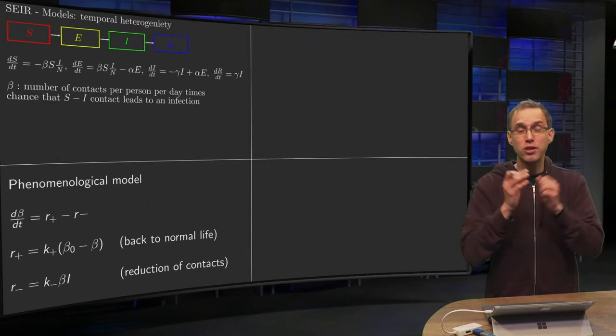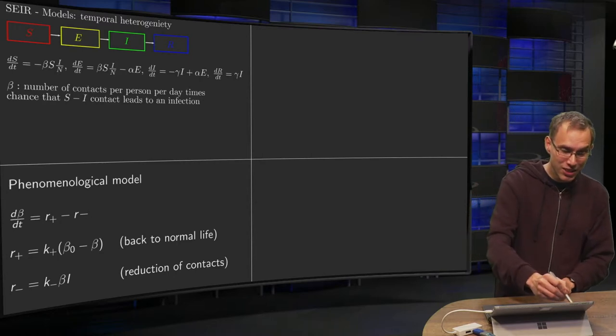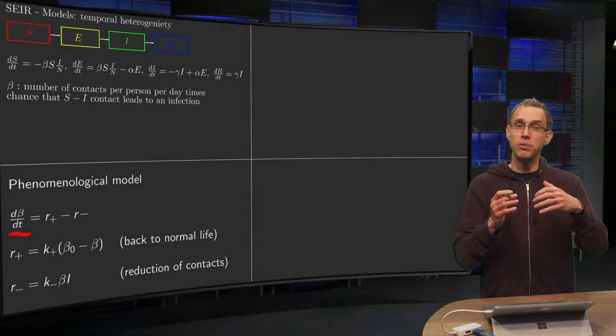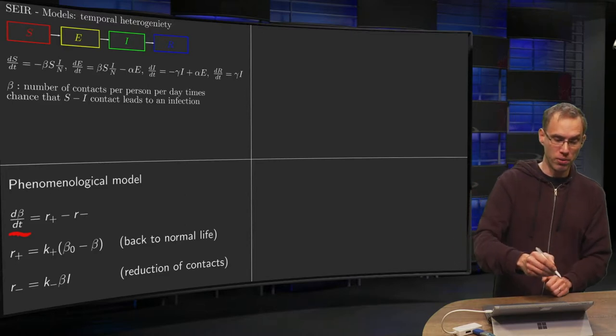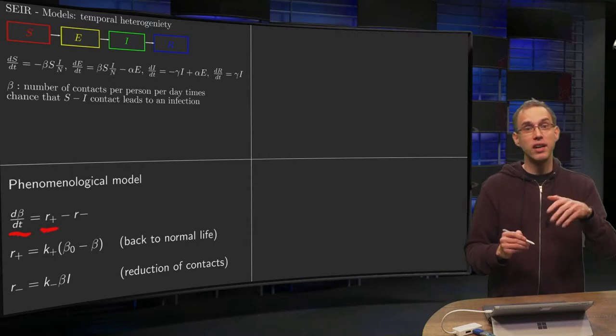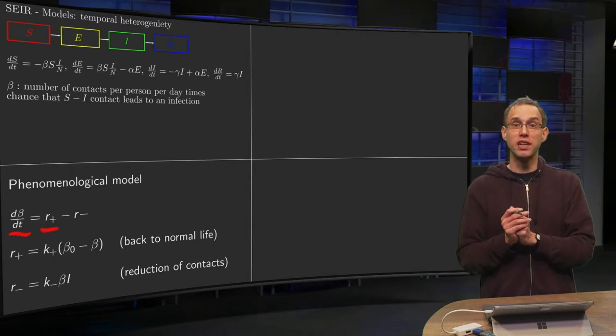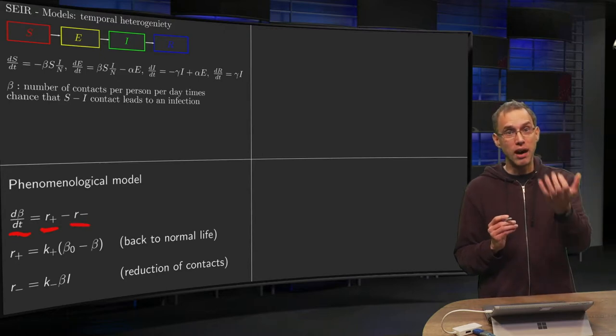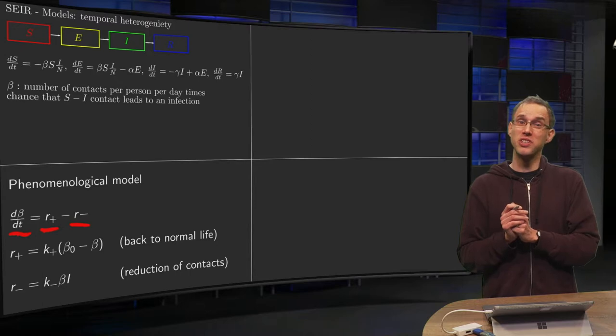We will use an additional differential equation for beta. We say beta is going to change—there's an r plus, a rate at which the number of contacts increases, and an r minus, which models how the number of contacts decreases.